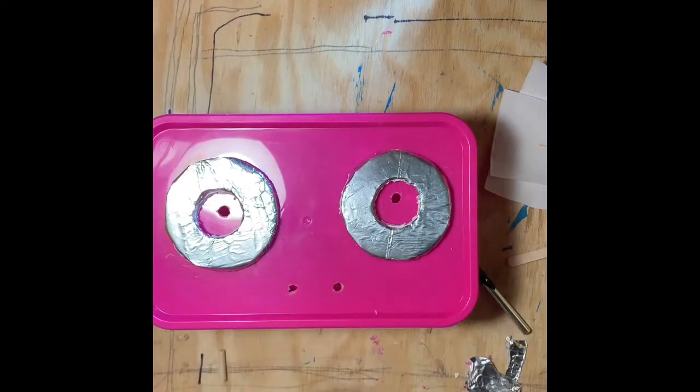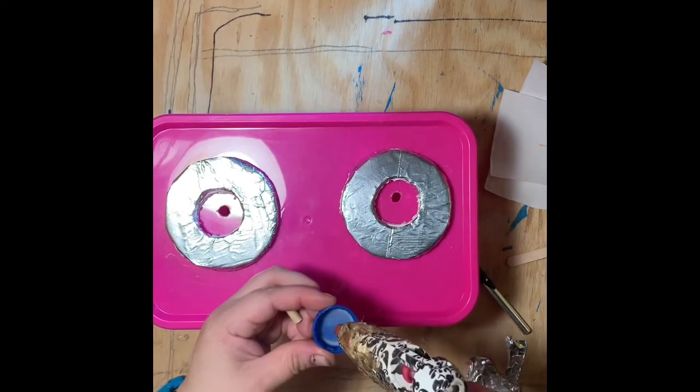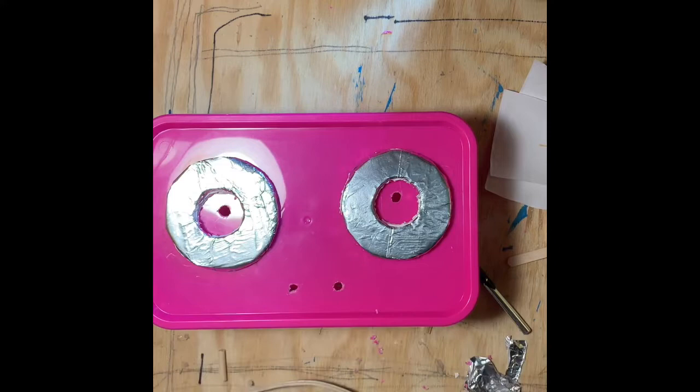I'm going to use a lot of hot glue to glue the dowel on. I'm going to center the dowel on the inside of the bottle cap, and then use a lot of hot glue to secure it.